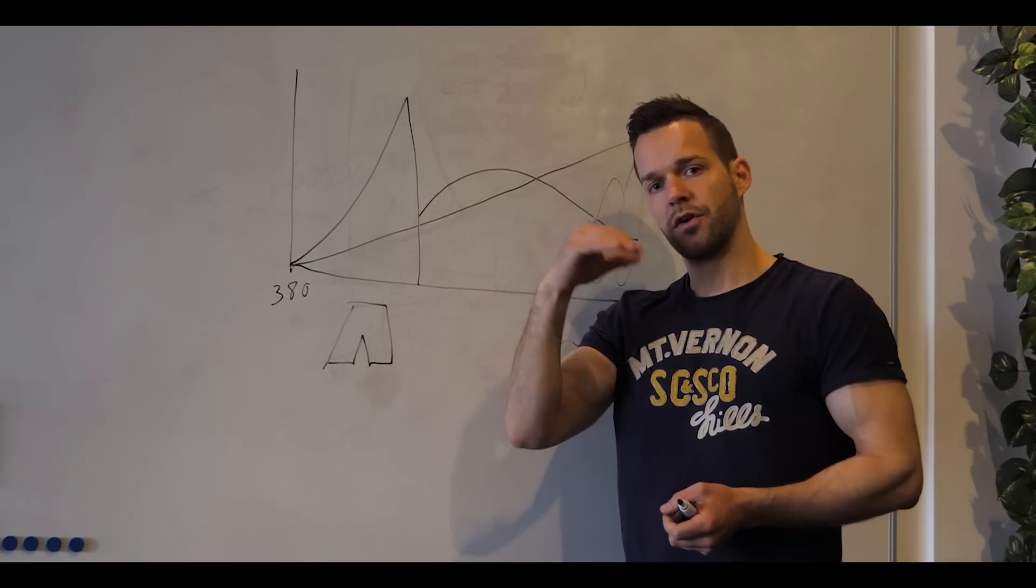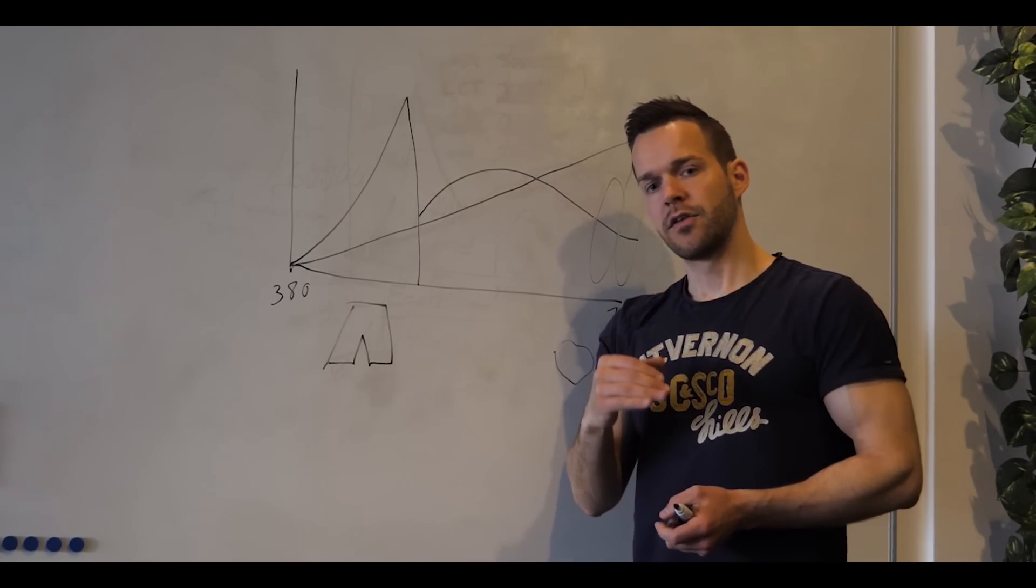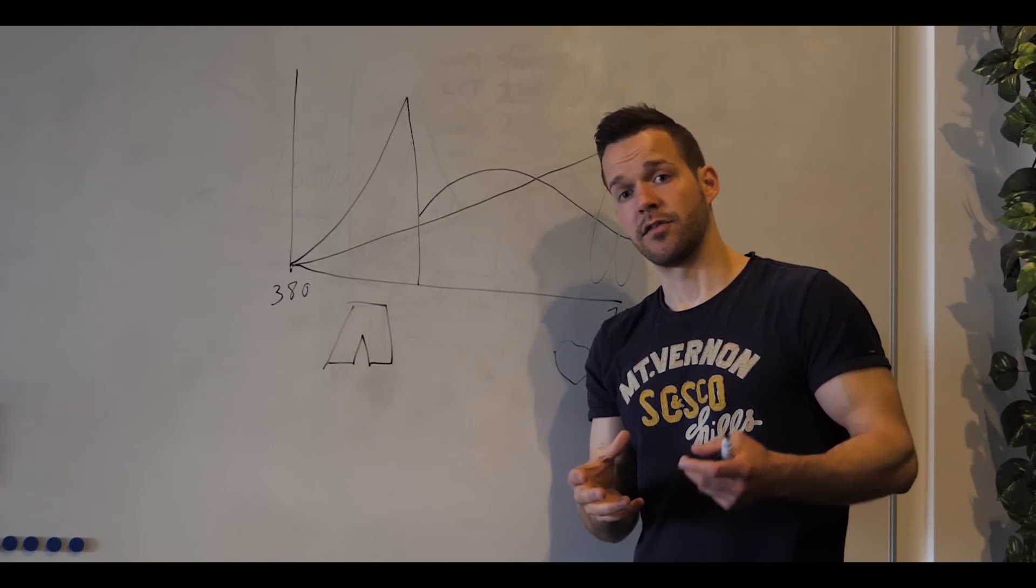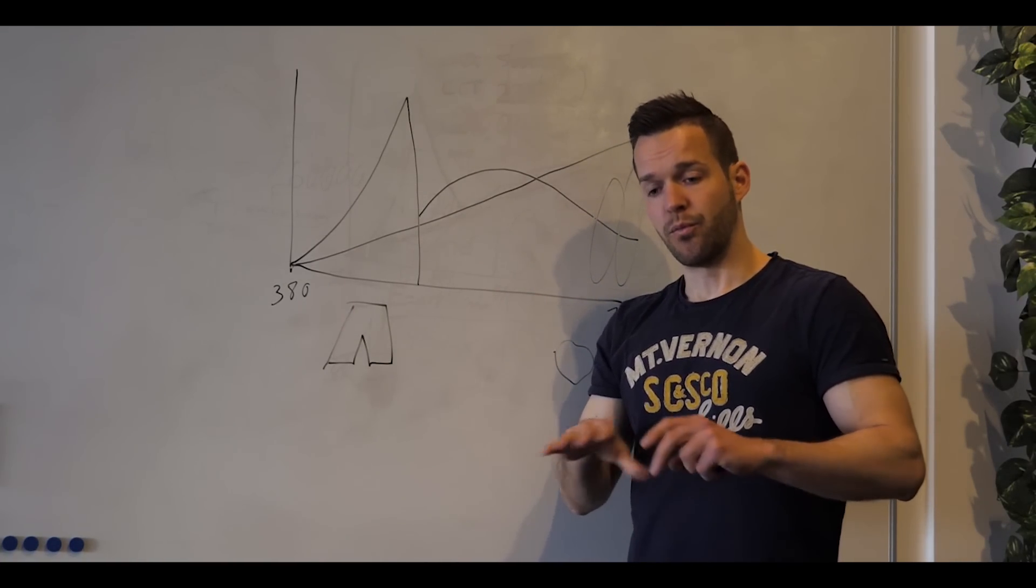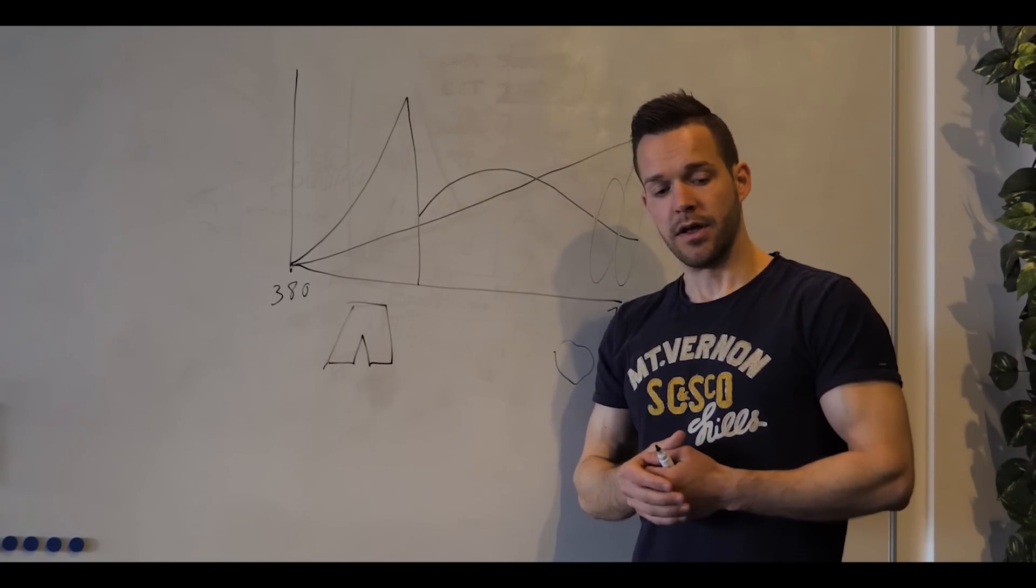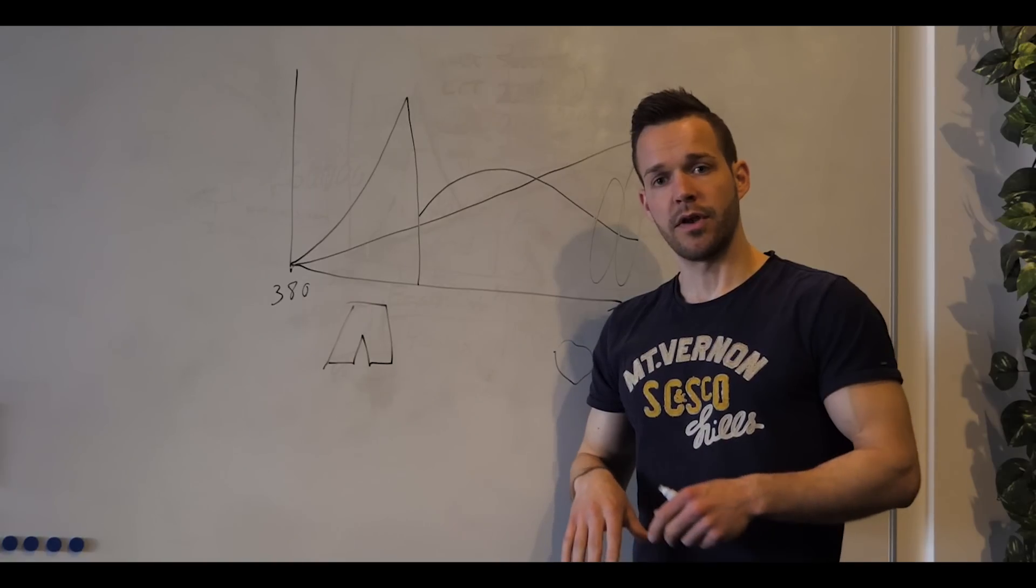The lower you get in the color rendering index, I will say the worse, you have a bad light source. If you have, let's say 60, then you have really not clear colors in your different areas around the room.